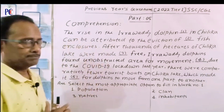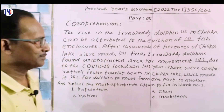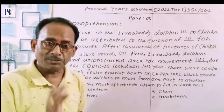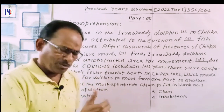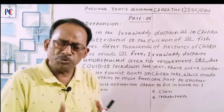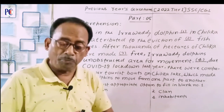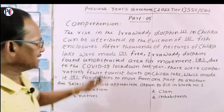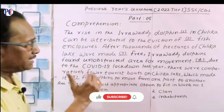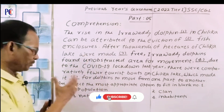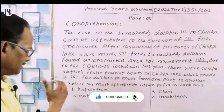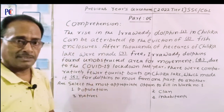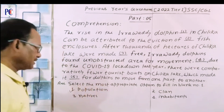The rise in the Iravadi Dolphin — blank space number one. The word required here is 'population', because 'rise' is always used while talking about population. The four options are: population, clan, natives, inhabitants. Here we are concerned with the Iravadi Dolphin in Chilika Lake, so the rise of clan, natives, or inhabitants is not possible. The right option is number one — population.